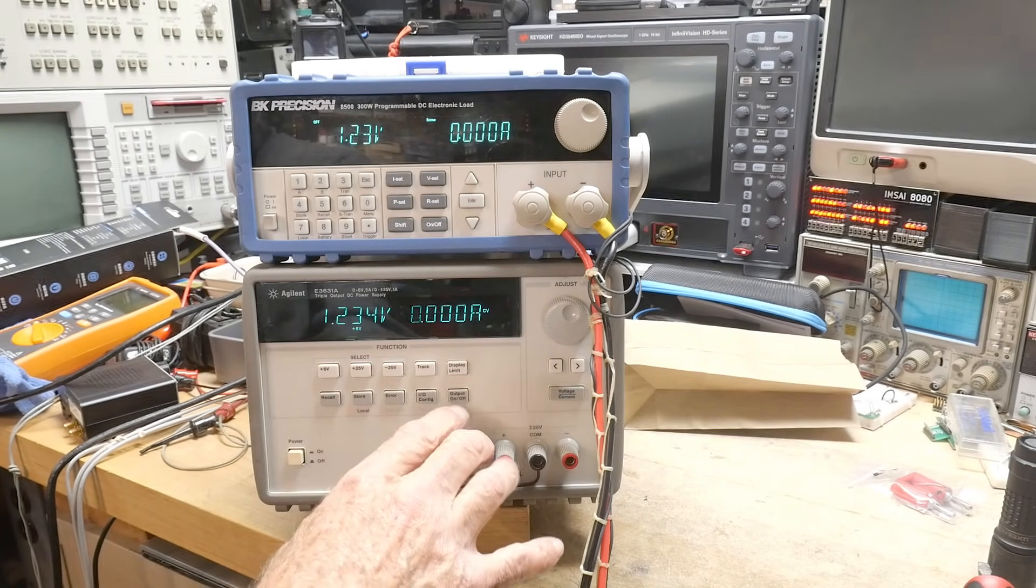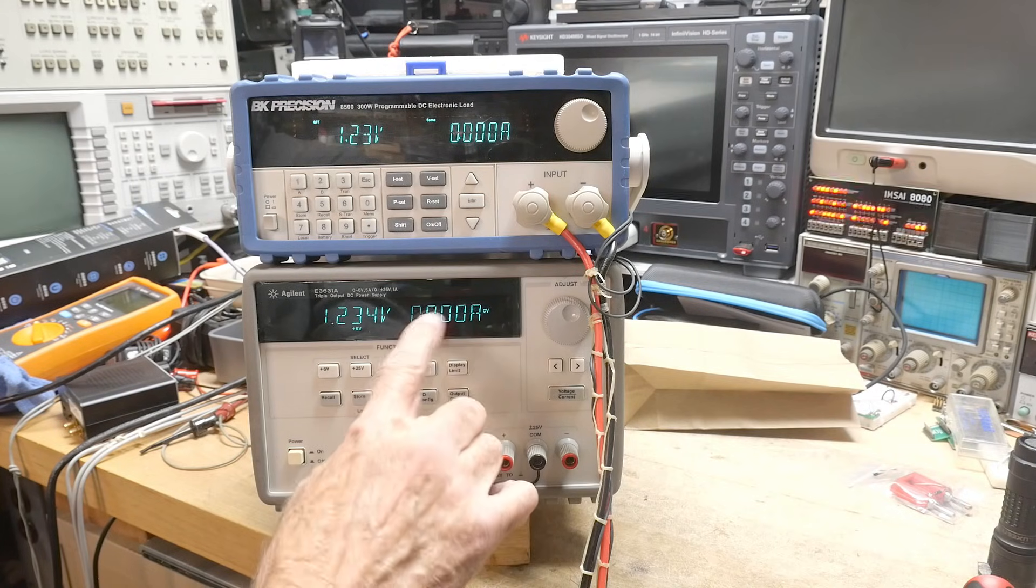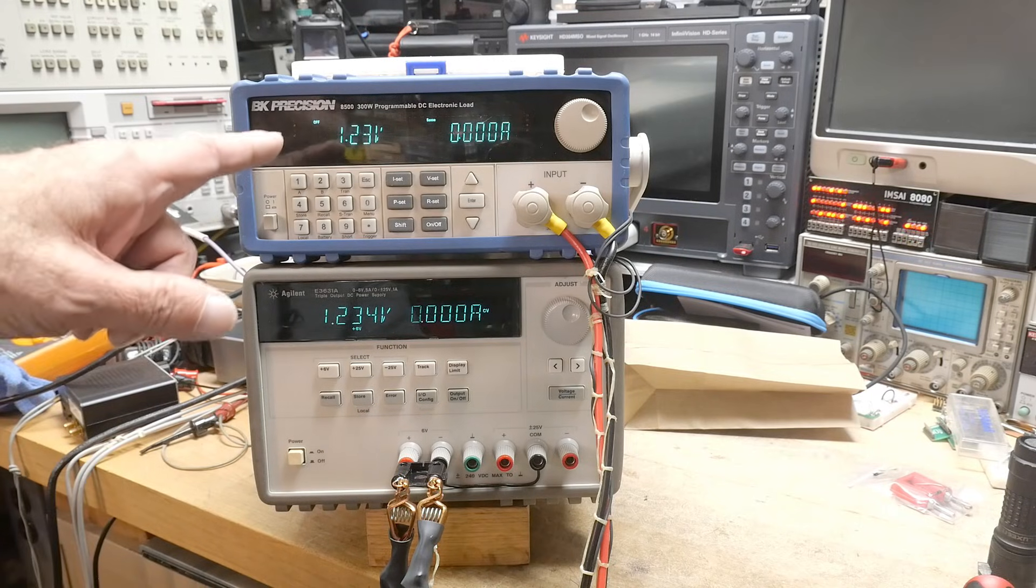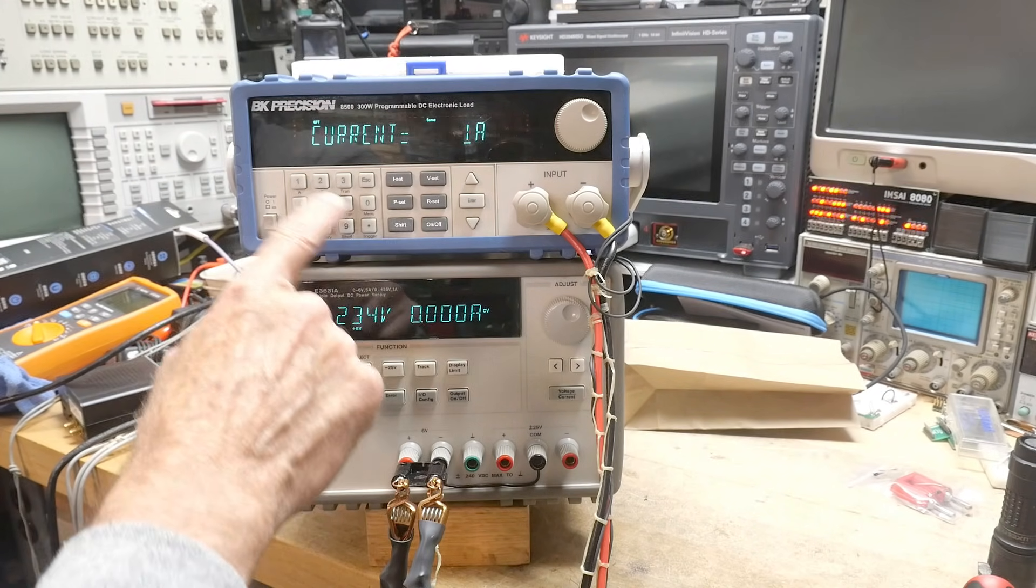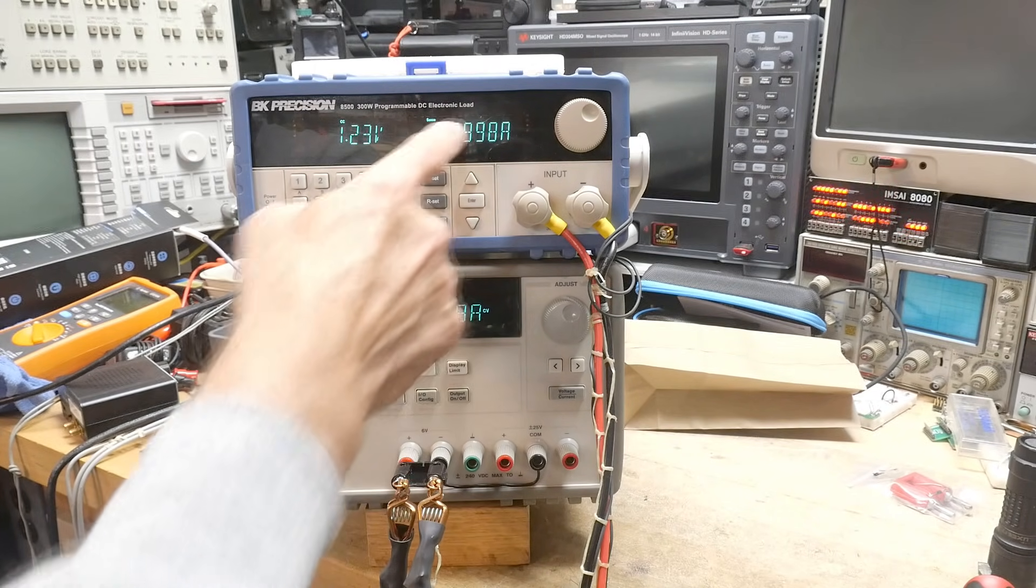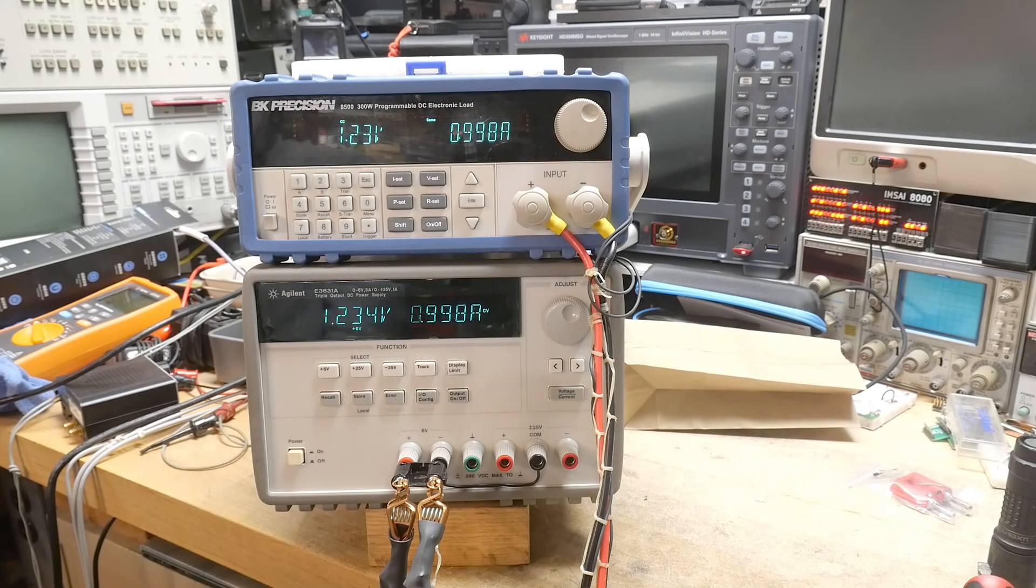Let's go ahead and turn it on, turn it off. Okay, so we're outputting 1, 2, 3, 4, and we're reading 1, 2, 3. That looks good. Let's go ahead and set this to 1 amp of current draw. We're getting 998, and this is 998, so that's working very, very nice.